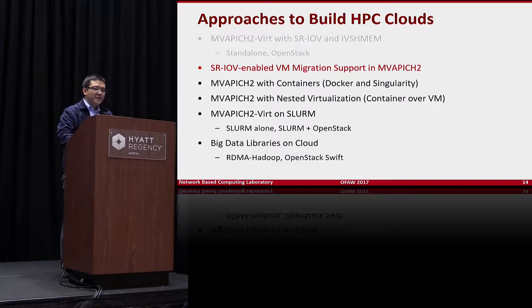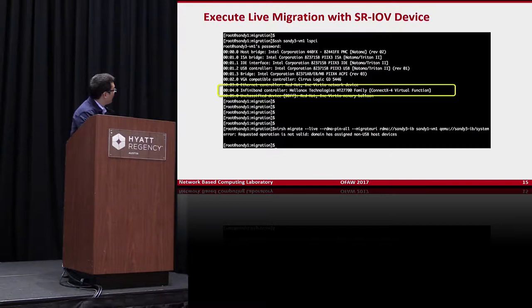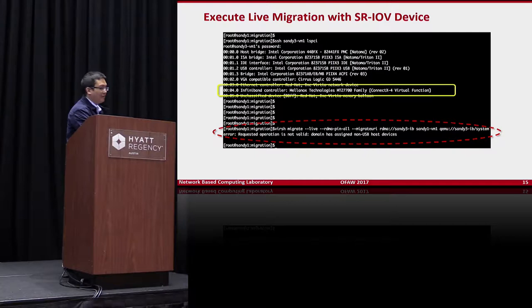After achieving good performance with SR-IOV, the question becomes: what happens if you want to do migration? This screenshot shows what happens when you attempt live migration with an SR-IOV virtual function device attached to a VM — KVM immediately tells you that you can't do it because the SR-IOV device is present.